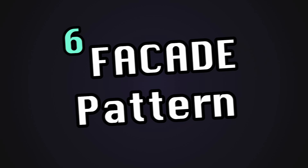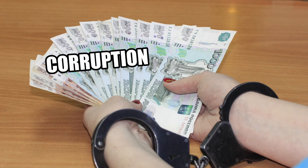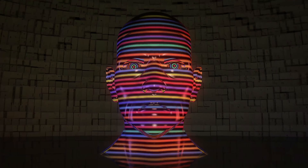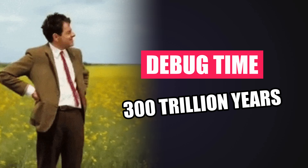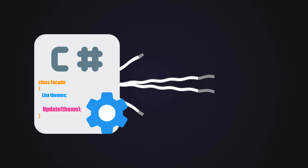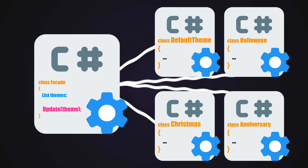One of the most practical design patterns of all time is the facade pattern. It's essential for hiding all the corruption, shenanigans, and complexity that the end user doesn't need to know about. It's based on a simple reality: the user only cares about how the game looks and feels. You can create an entire game in a single C# script, but it will take 300 trillion years to debug — unless you leverage the facade pattern to create a simple API that hides all the low-level details, like when you want to change the UI theme for a festival.